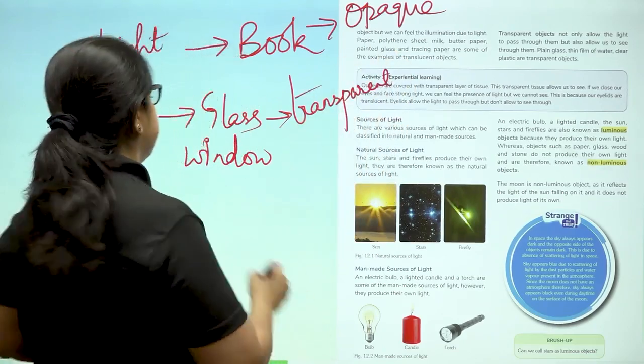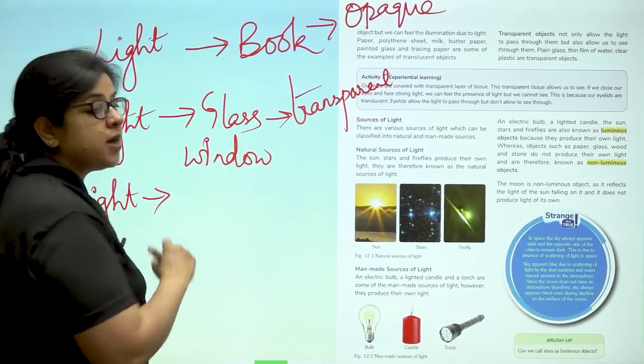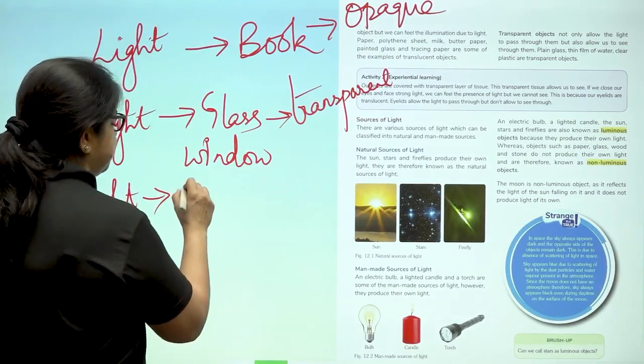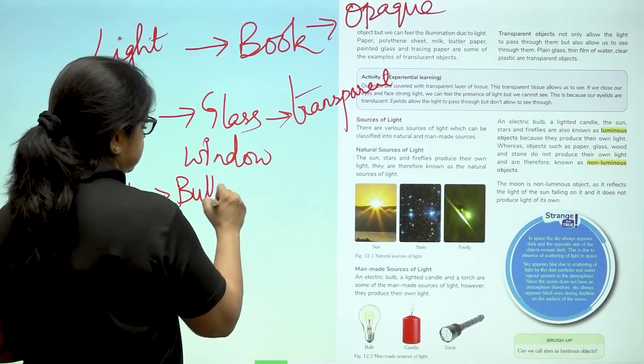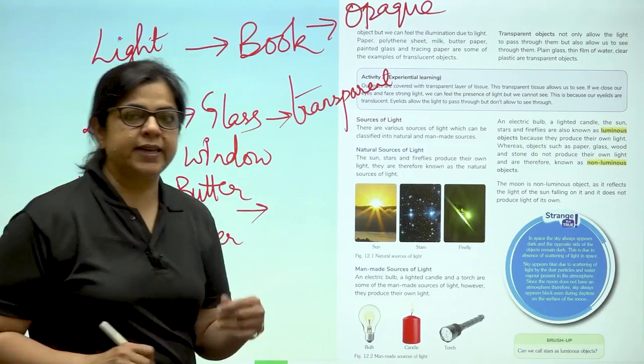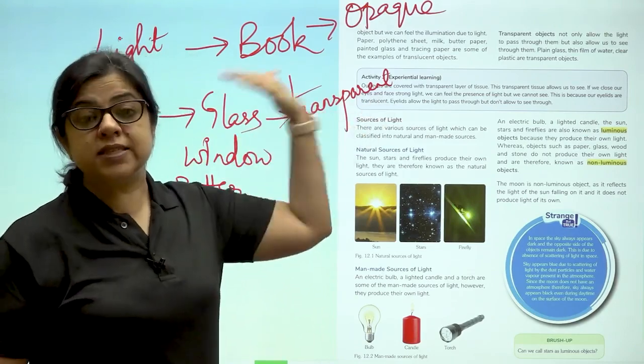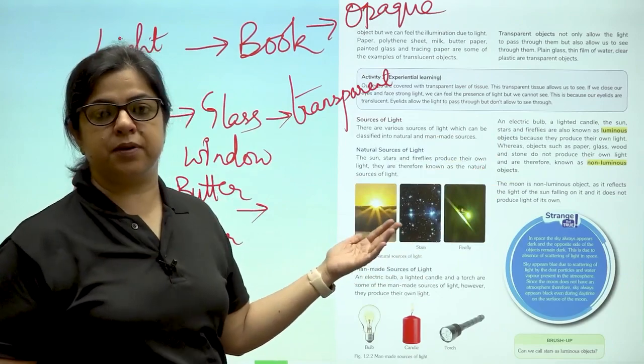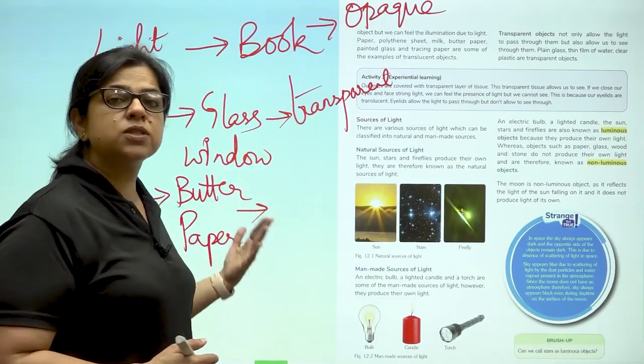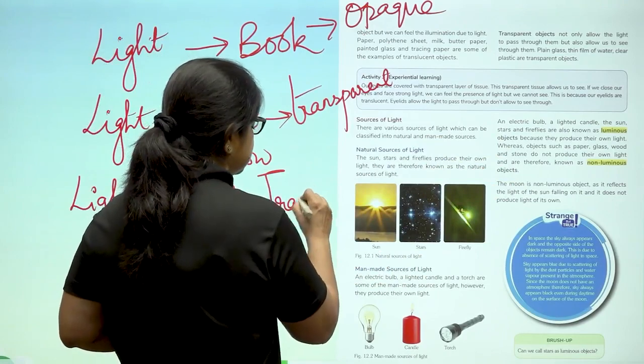And third, if I try to pass light through maybe a butter paper, what will happen? I will be able to see that there is light through the butter paper, but I cannot see what is behind the butter paper. This is because they only allow some light to pass through them. Such objects are called translucent.